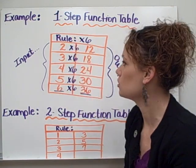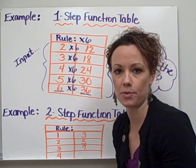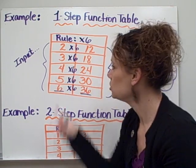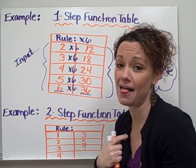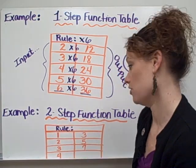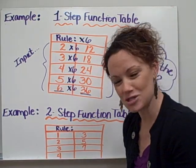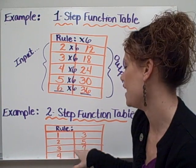Now this is a one-step function table where we're only doing one operation. We're only doing one type of math to the inputs to get the outputs. Let's look at a little more challenging example. Two-step function tables. This one's a little bit tricky.